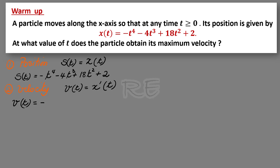V of t will be negative 4t cubed minus 12t squared plus 36t.